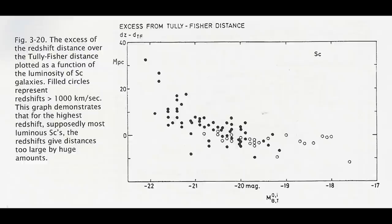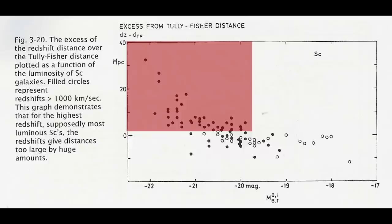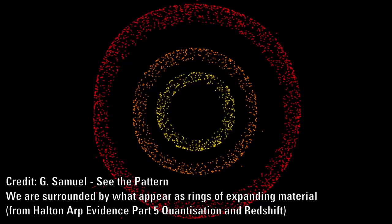The Tully-Fisher relationship is a way of relating luminosity of the galaxy with its distance. The further away these galaxies were, the greater the difference between these two measures became.